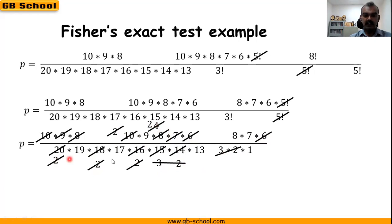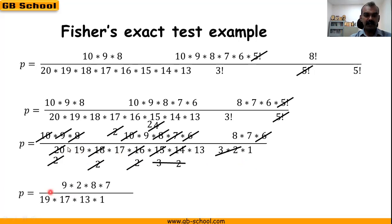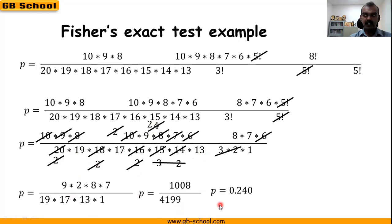All numbers are reduced except the prime numbers 19, 13, and 17, which can't be reduced further. The remaining numbers are 9 × 2 × 18 × 7 divided by 19 × 17 × 13 × 1. Multiplying gives 1008 over 4199, yielding a p-value of 0.240.